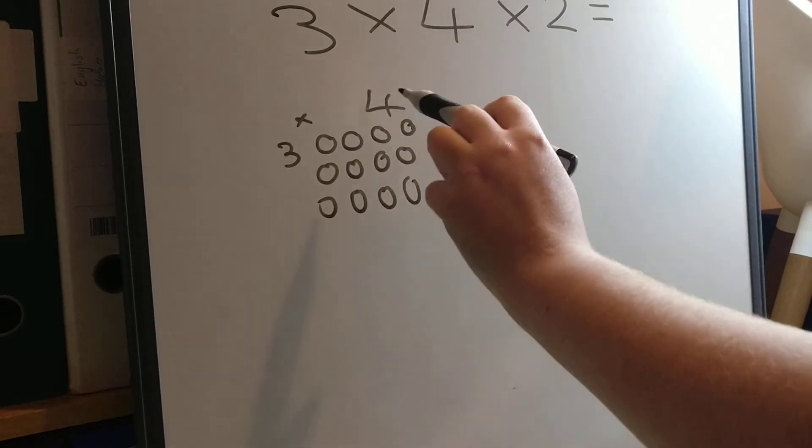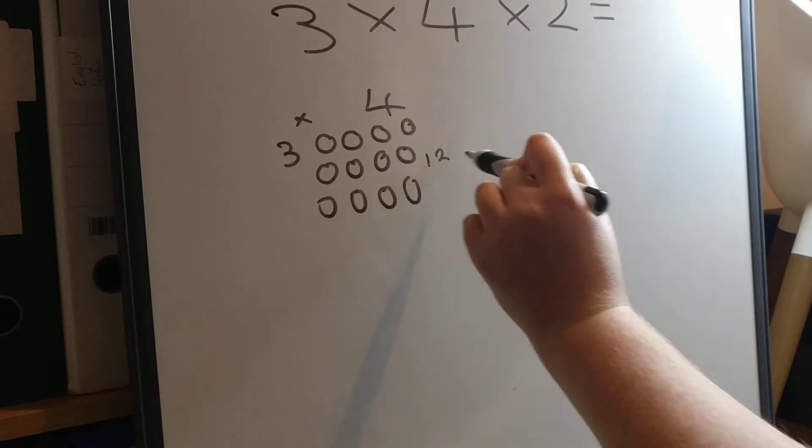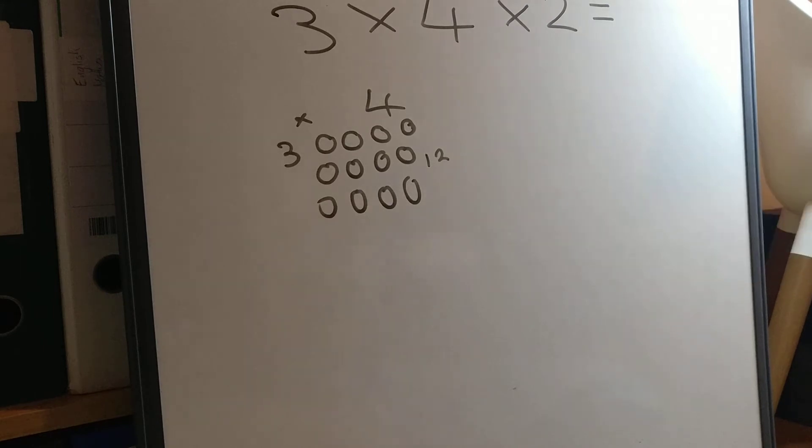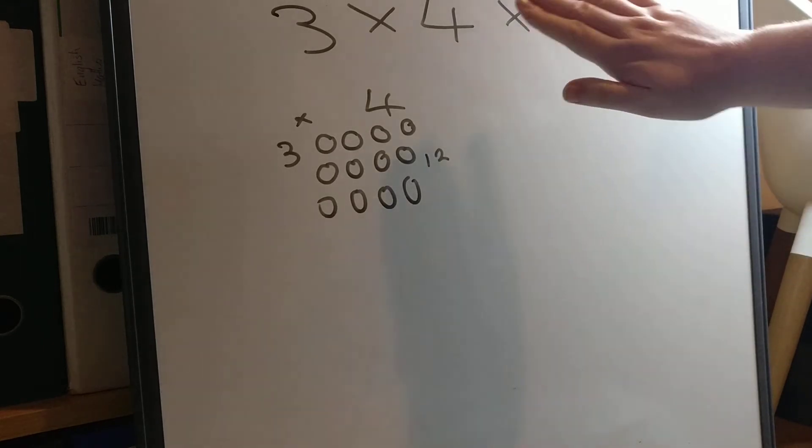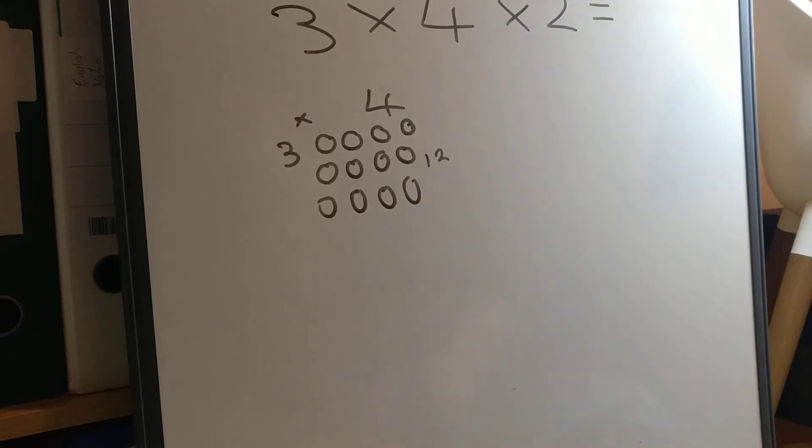Or counting the multiple: four, eight, twelve. So the product of 3 times 4 is 12. I've written it just next to the array to help me remember it. So we've sorted out the first part of the question. We know what 3 times 4 is. It's 12.